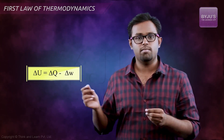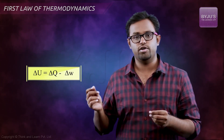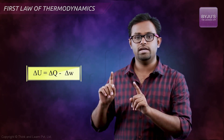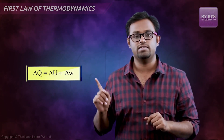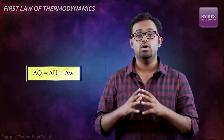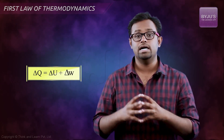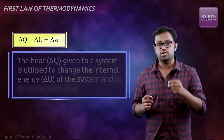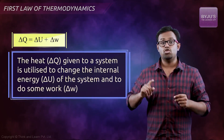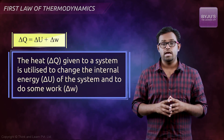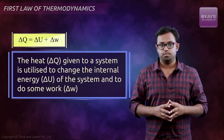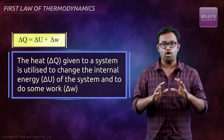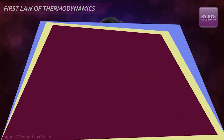We usually write the mathematical statement of the first law turned around as: delta Q equals delta U plus delta W. This means that the heat given to a system is utilized in changing the internal energy of the system and doing some work. That's the first law, and that's the mathematical statement.